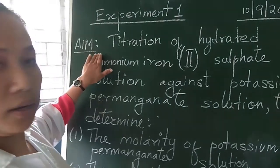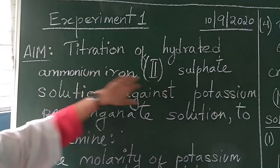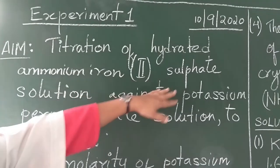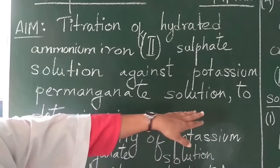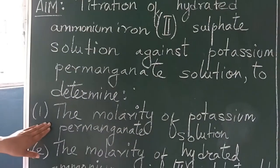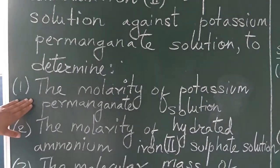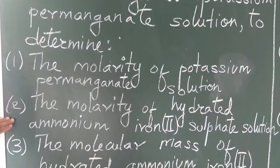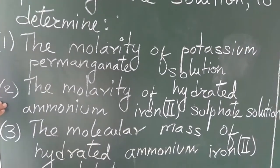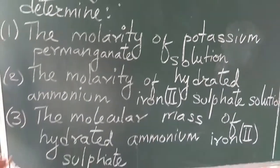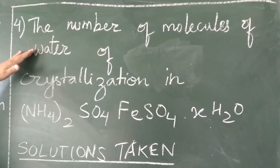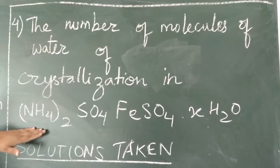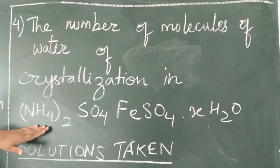The aim of experiment 1 is titration of hydrated ammonium iron 2 sulfate solution against potassium permanganate solution, to determine: the molarity of potassium permanganate solution, the molarity of hydrated ammonium iron 2 sulfate solution, the molecular mass of hydrated ammonium iron 2 sulfate, and the number of molecules of water of crystallization in hydrated ammonium iron 2 sulfate crystals.